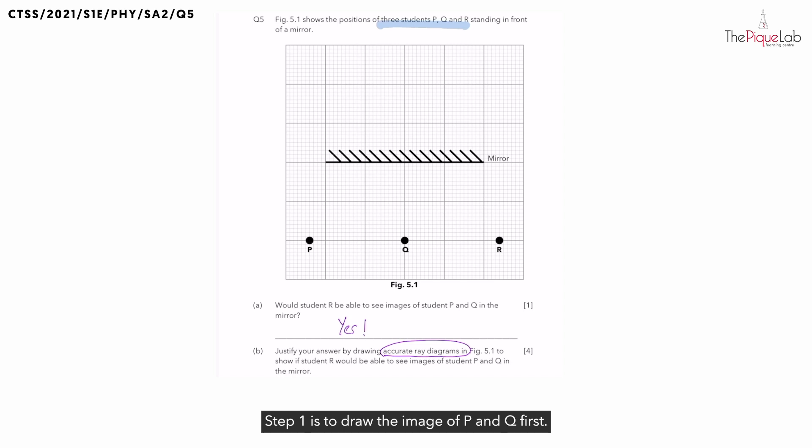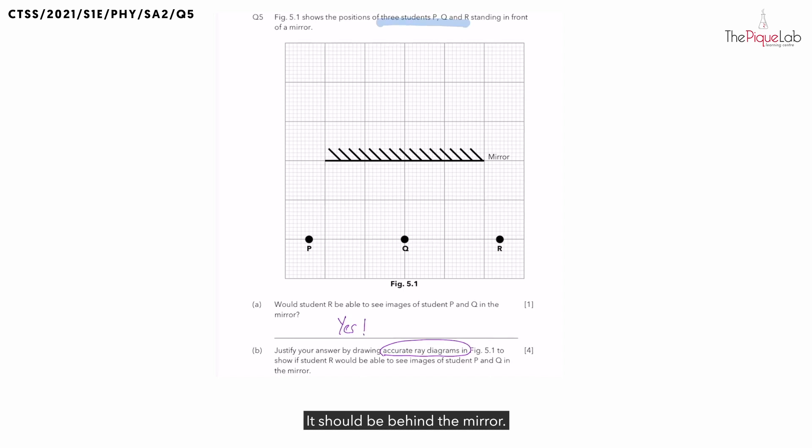Step one is to draw the image of P and Q first. Now where should the image be? Should it be in front or behind the mirror? It should be behind the mirror. Now what about the distance? It must be the same distance as the object is from the mirror.